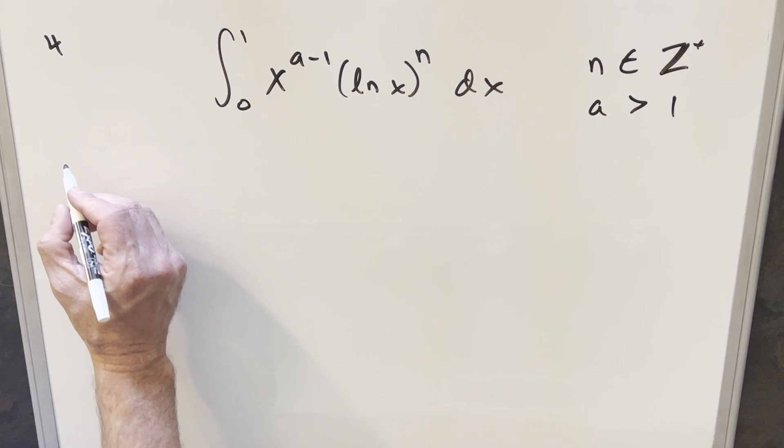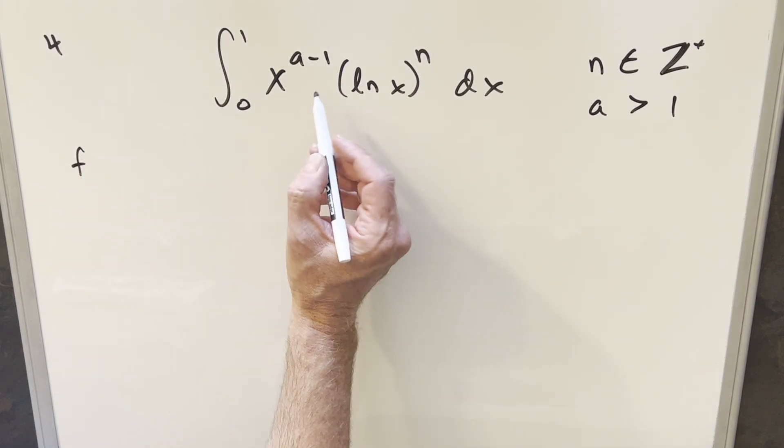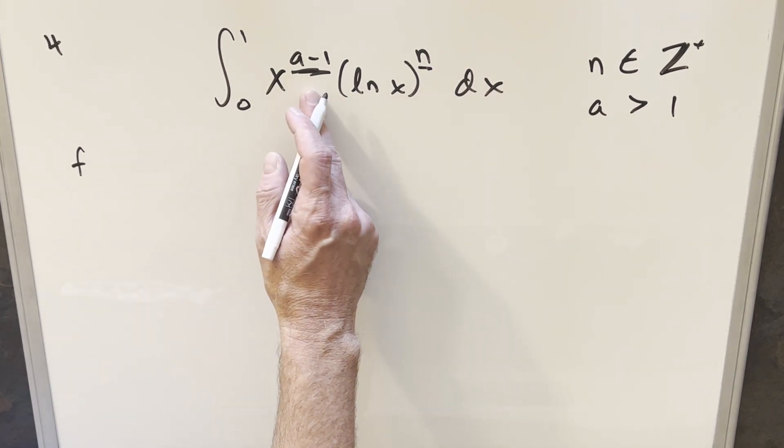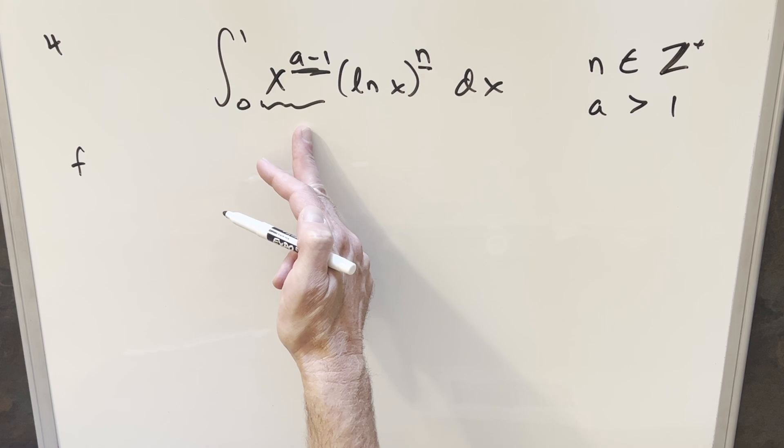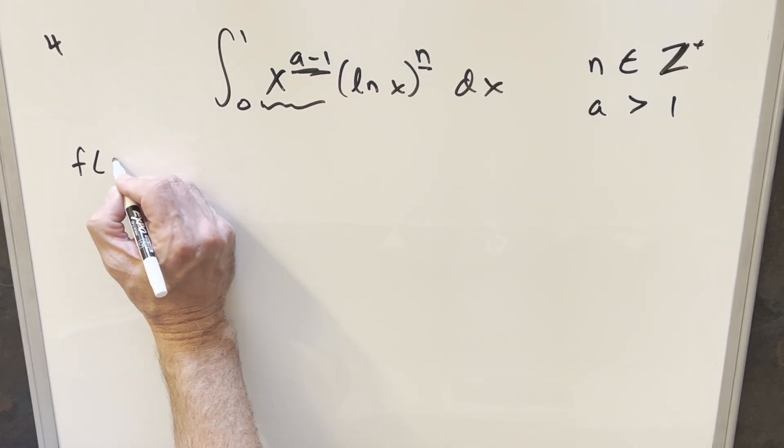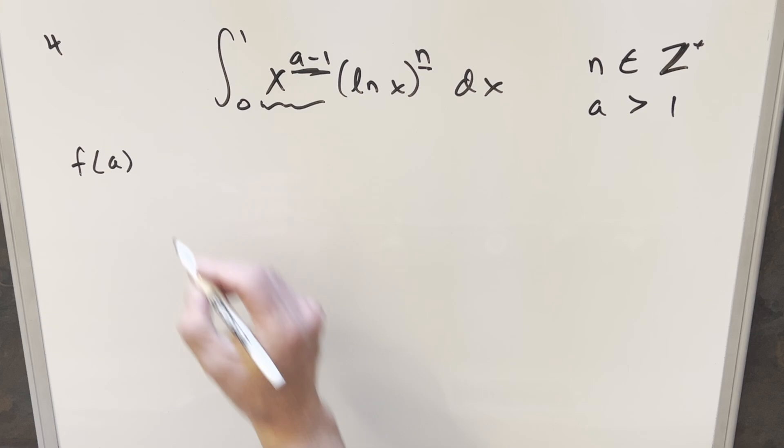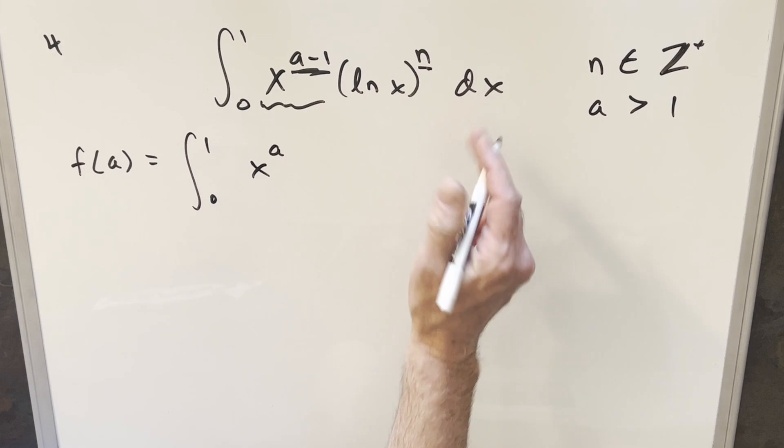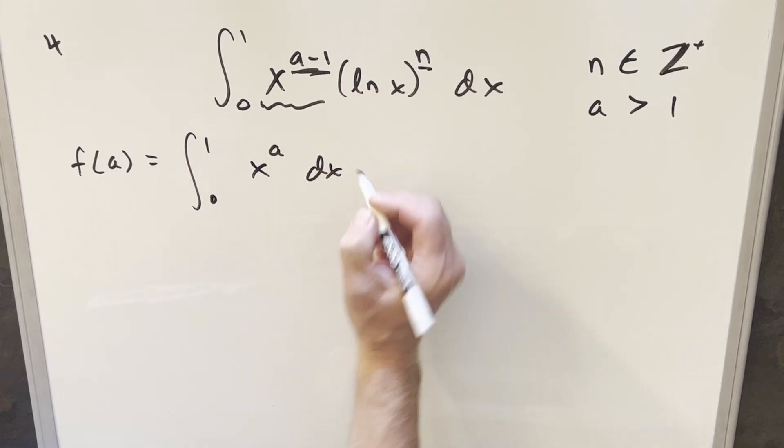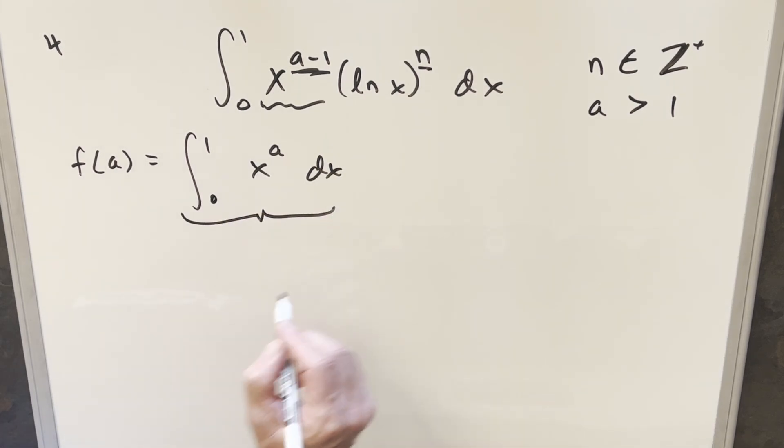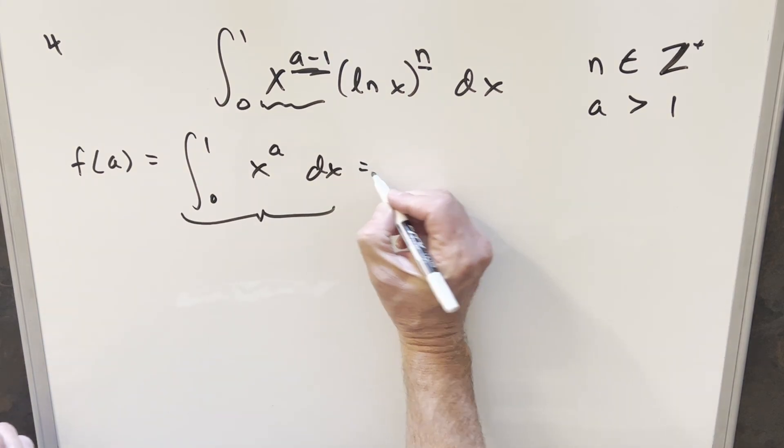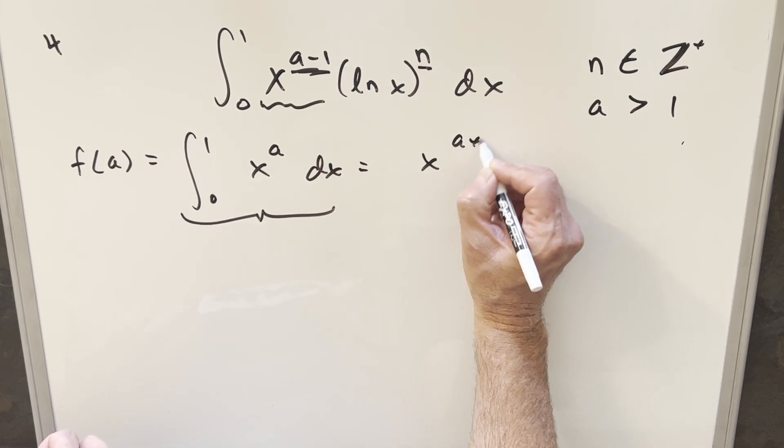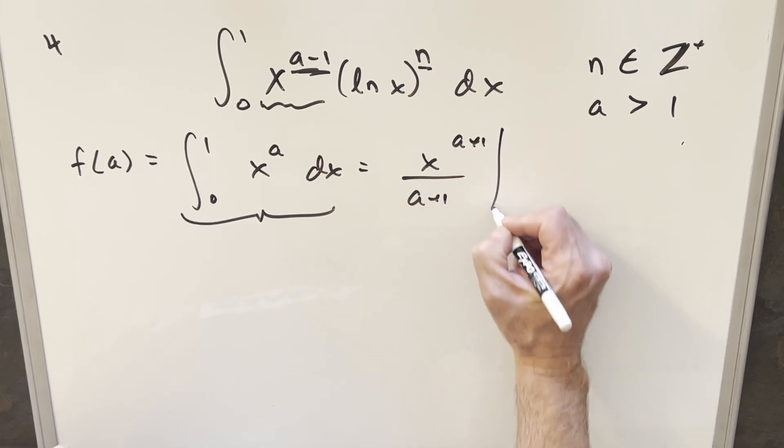So to start with, I'm going to create a new function. I need to parameterize something. We already have other parameters here, right? I could create a function in terms of n or I could create a function in terms of a. What I'm going to do is deal with this over here, but I don't really want to deal with all of a minus one right now. Let's just deal with f of a. And we'll create something kind of similar here. We'll have an integral going from zero to one. I'm just going to do x to the a.